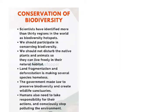Scientists have identified more than 30 regions in the world as biodiversity hotspots. We should not disturb native plants and animals so they can live freely in their natural habitat. Land fragmentation and deforestation is making several species homeless, as trees are home to many birds and insects. Governments make laws to preserve biodiversity and create wildlife sanctuaries. Humans also need to take responsibility for their actions and consciously stop polluting the environment.